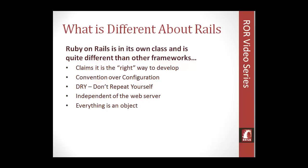Rails looks at everything as an object — it's very object-oriented. Anything from strings to actual numbers are objects. You can call methods on a number; for instance, there's a times method, so you can have seven.times and that will run whatever phrase or string you put in seven times. It's very object-oriented, but you can also create procedural types of apps as well, so it's very flexible.